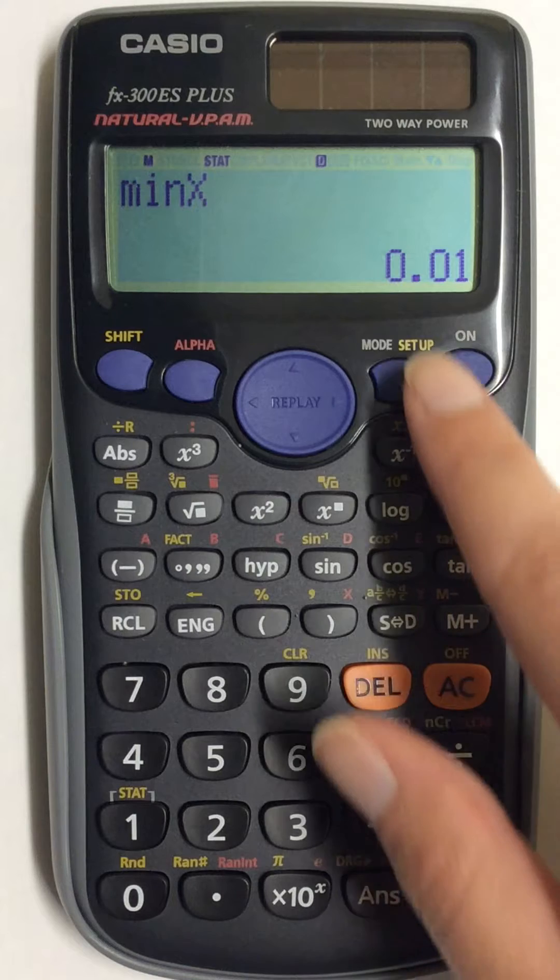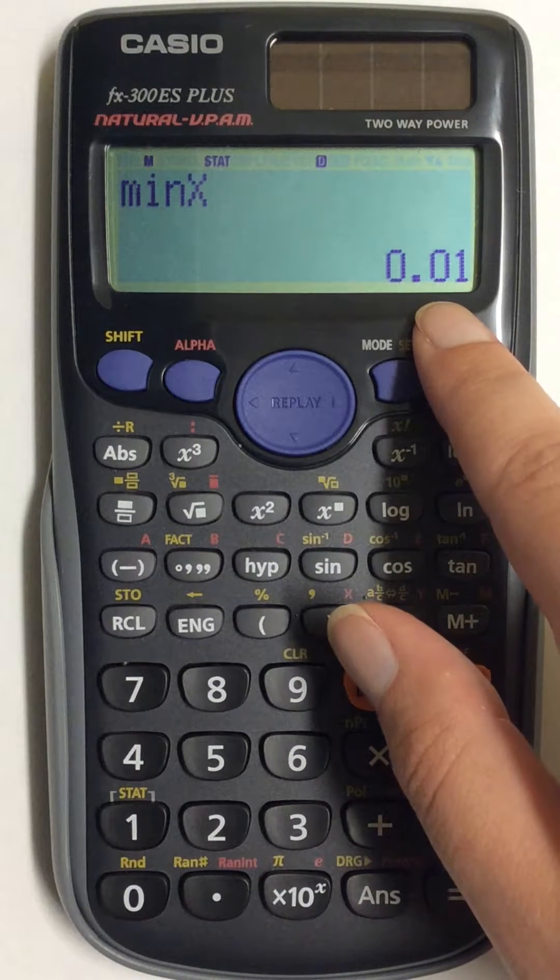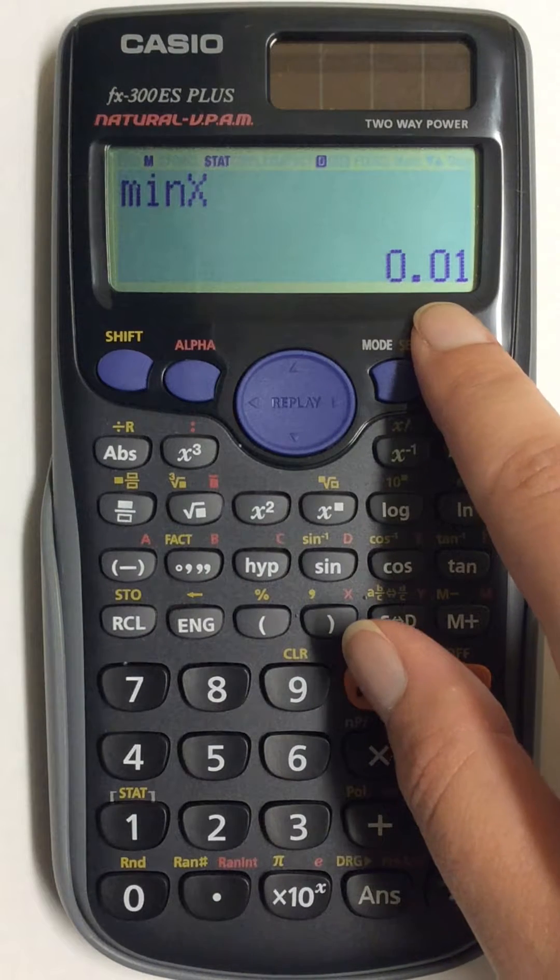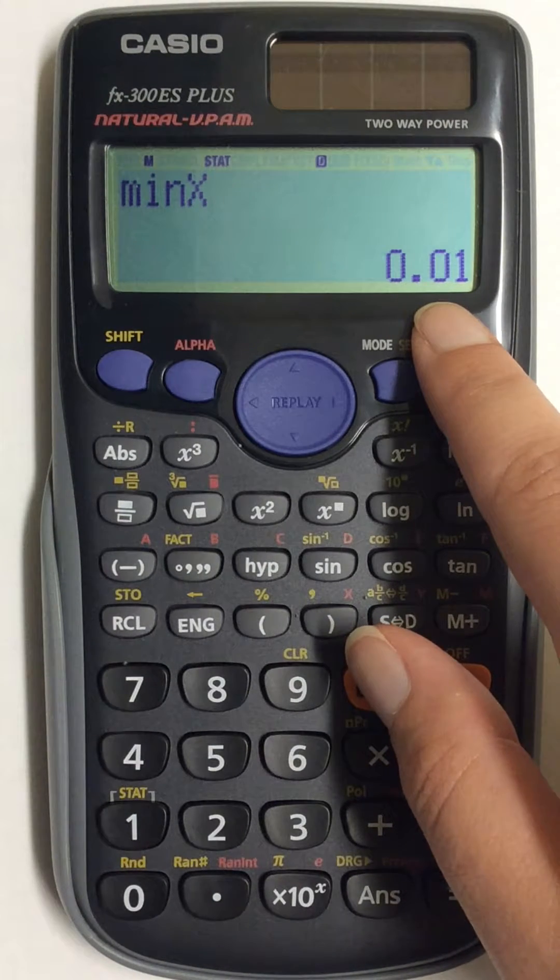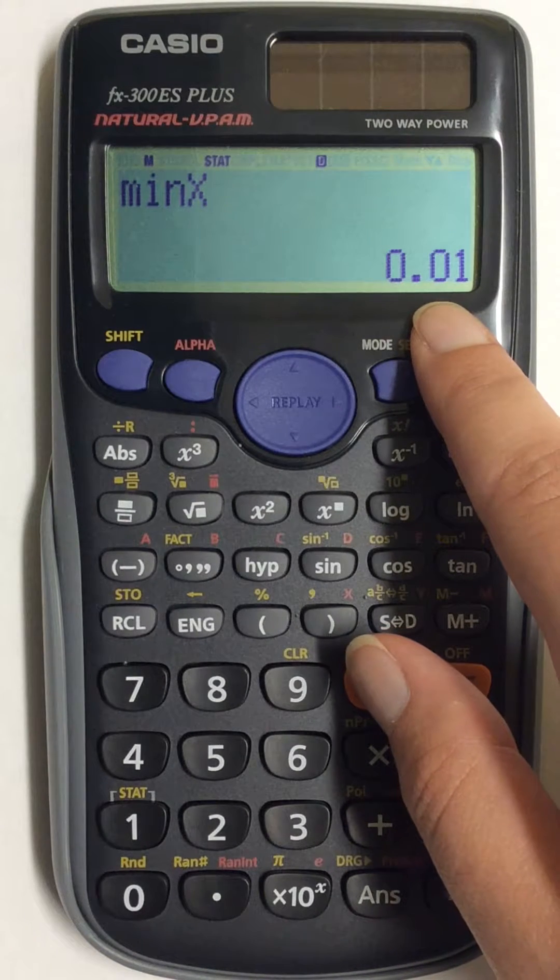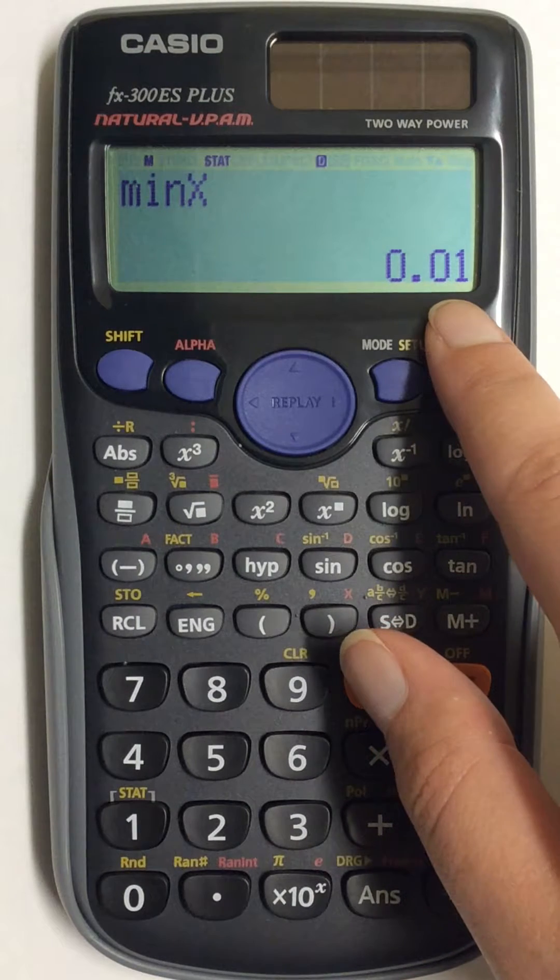So after pressing the equal sign, a number comes on the screen, and this will be your minimum. You don't have to have the numbers in order, so if your numbers are mixed up in your list, that's okay. Your scientific calculator will look through and find what the smallest number is in your list.